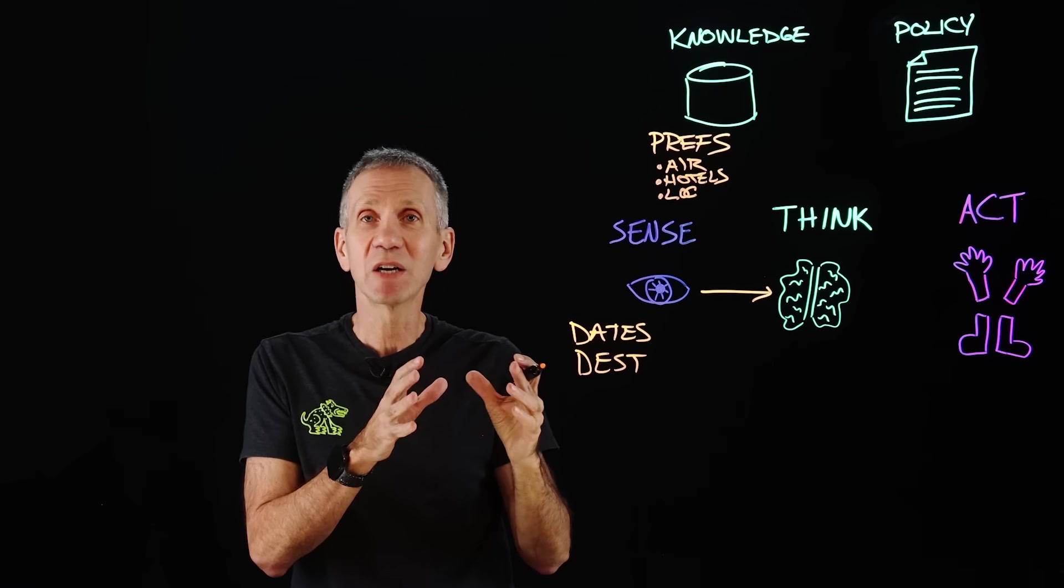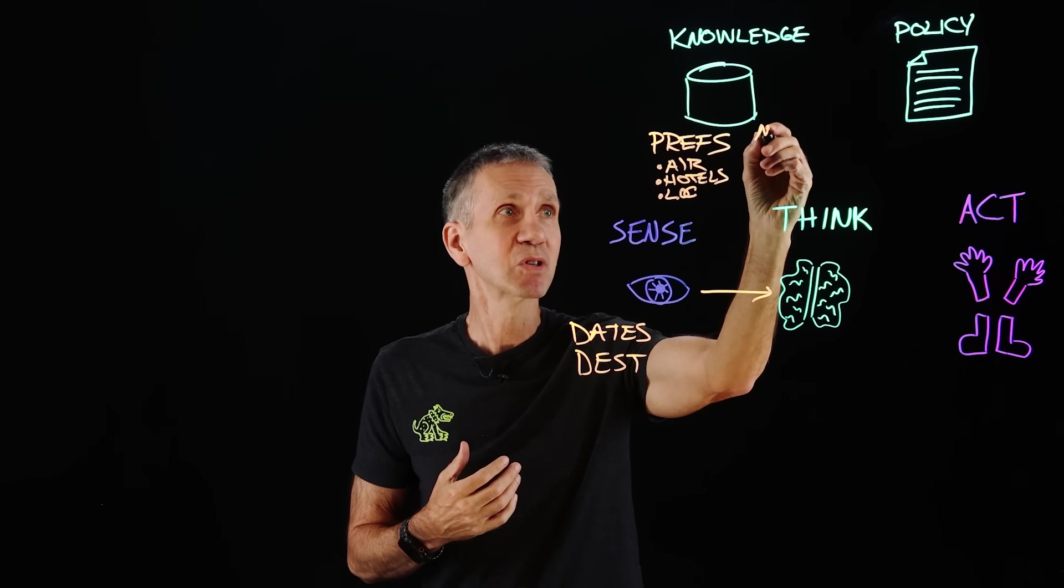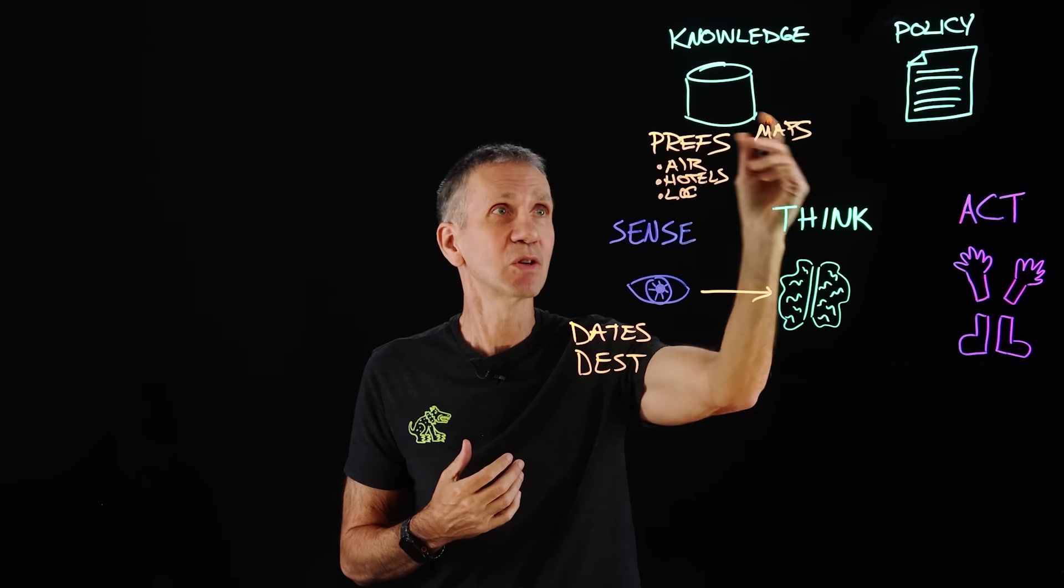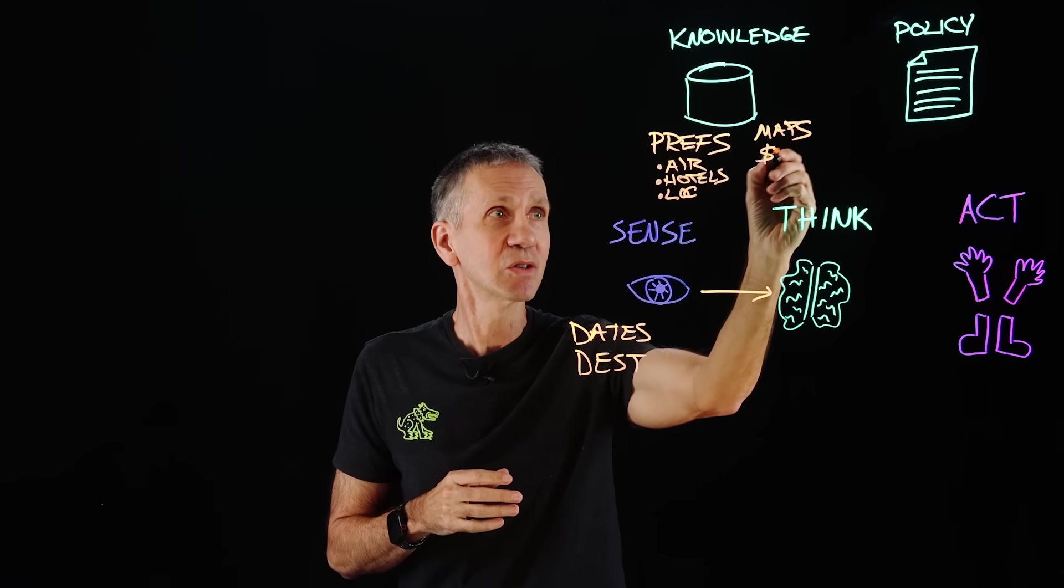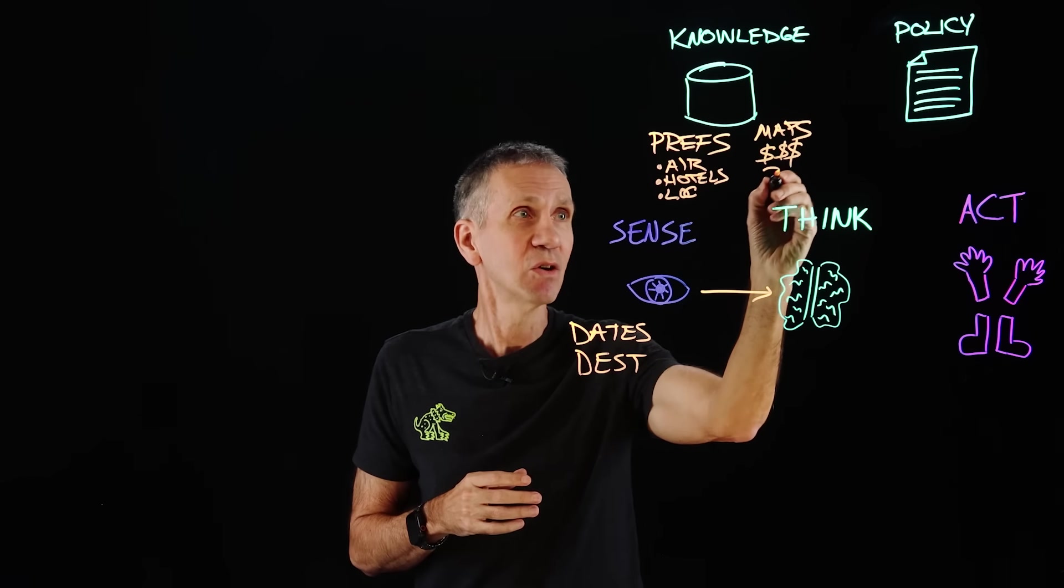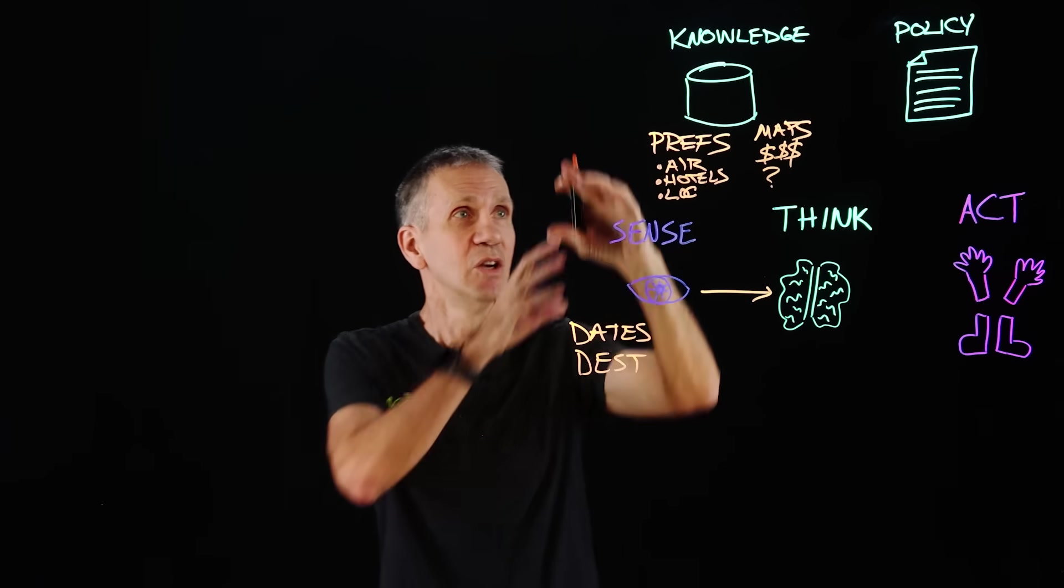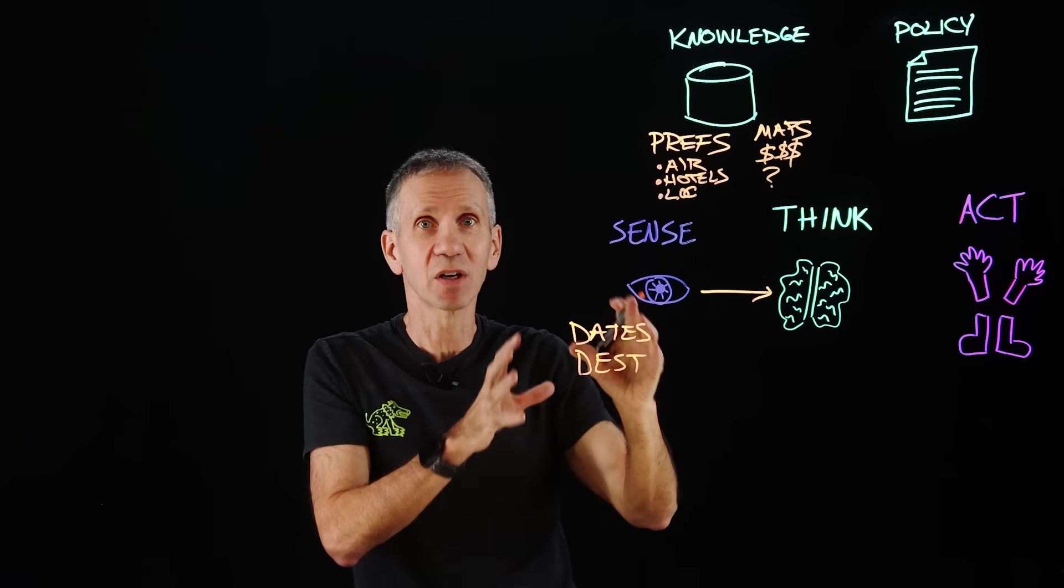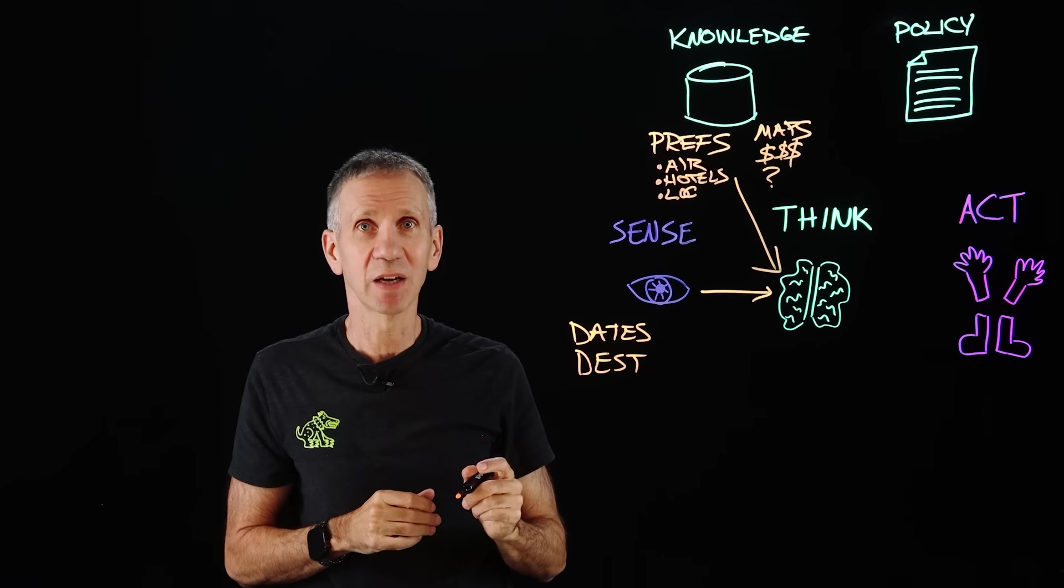Now, some other information that wouldn't be personal to me would be things like maps. So the system should know where all these different things are located. It needs to know prices for the different things that it might book. It needs to know availability for flights and hotels and things of that sort. So all of this knowledge base it could look up and that's going to be important to feed into the decision making logic.